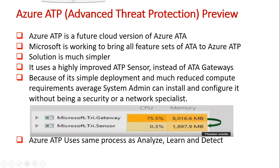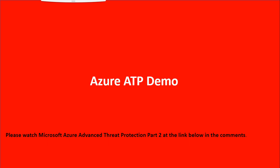Azure ATP uses the same process as ATA: analyze, learn, detect, and report — and you'll see that in action in a few minutes. I'd ask you to click the link in the comment section to go to the Azure ATP live demonstration. I can almost guarantee you'll see something you haven't seen before: how an attacker takes control of a machine, gets into the domain, and achieves domain dominance. It's not rocket science — it's straightforward and scary. The good news is that with Azure ATP deployed, you're protected and can take action almost immediately as all activities are shown in real time.